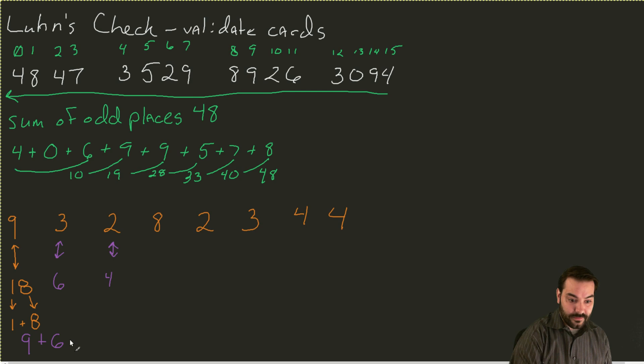I can do the exact same thing with the 2. I double the 2, I get a 4. I add the 4. However, when I get to this 8, I double the 8 and I get a 16. I do the exact same thing I did with the 9. I'm going to have to add the 1 and the 6. So 1 plus 6 equals 7. I keep going.